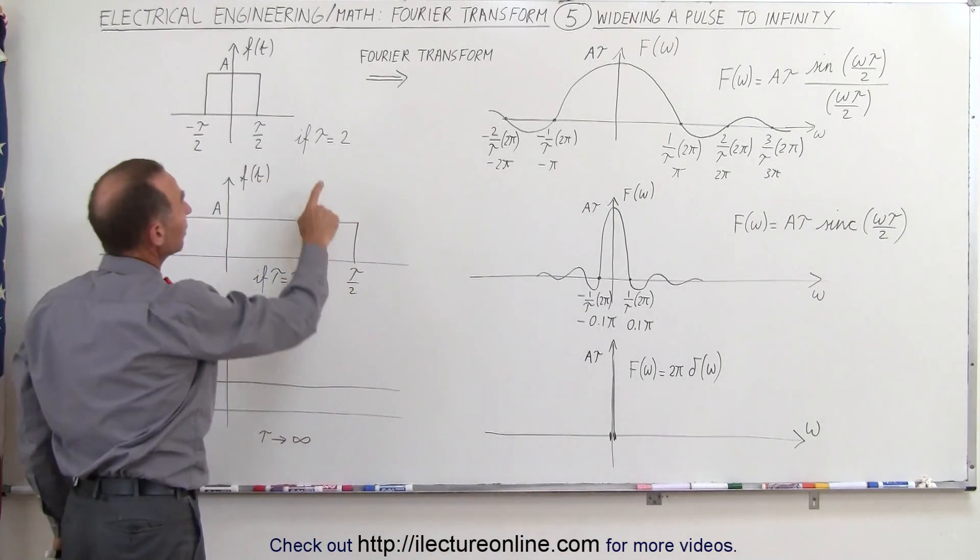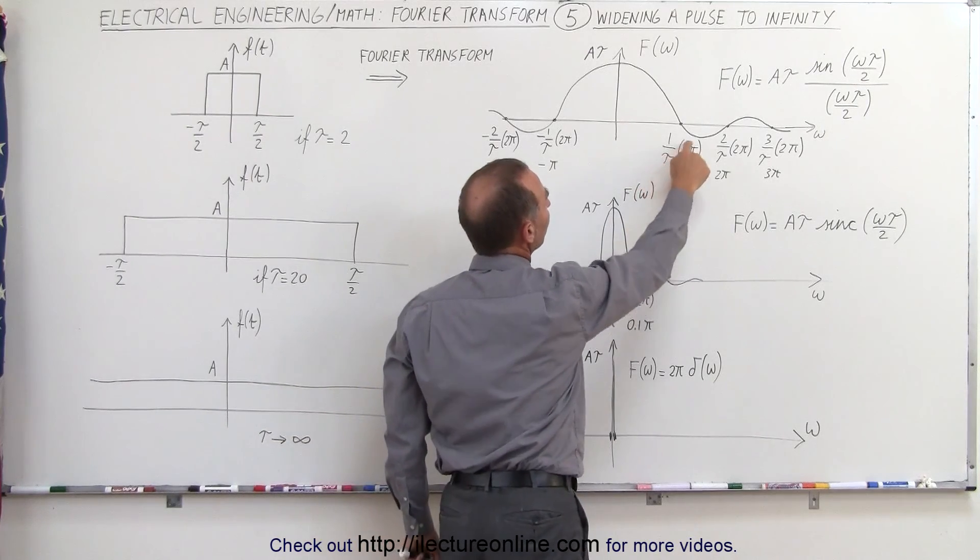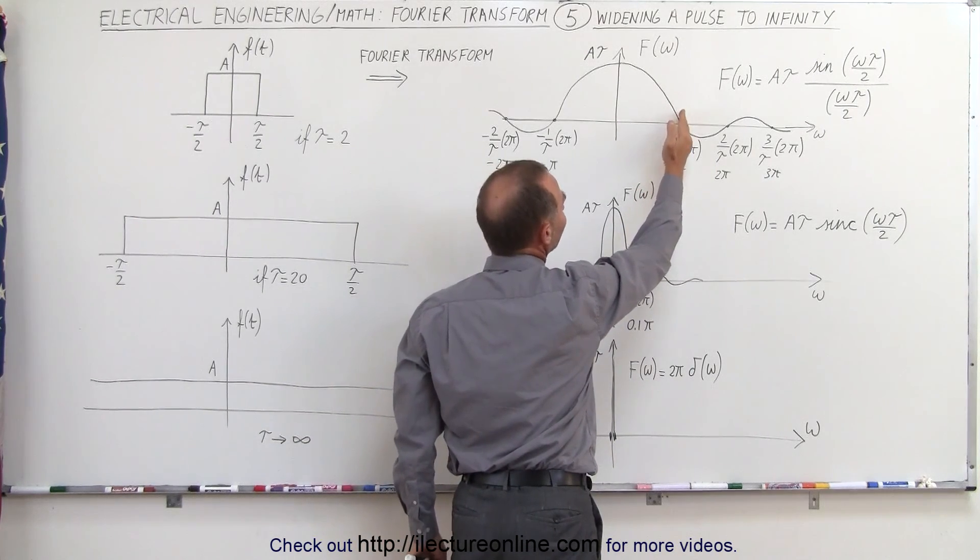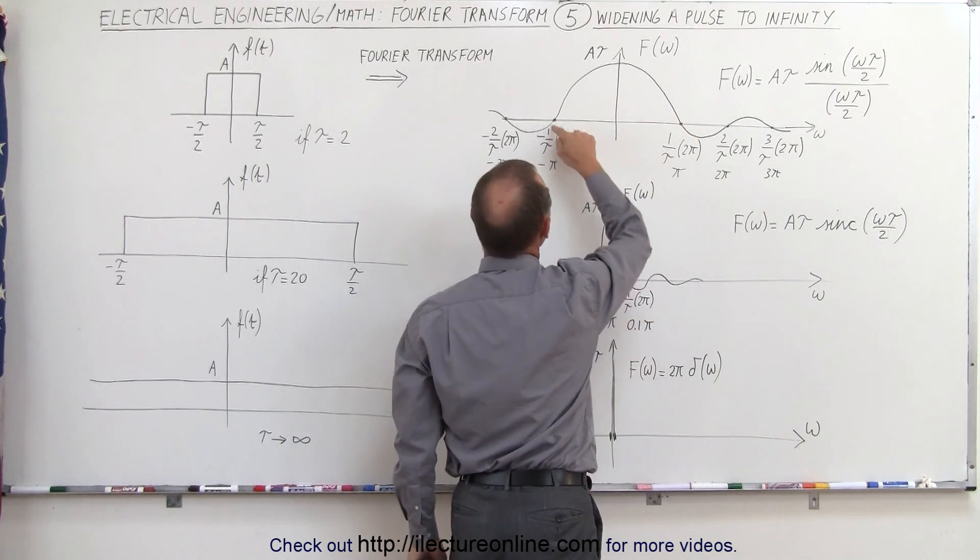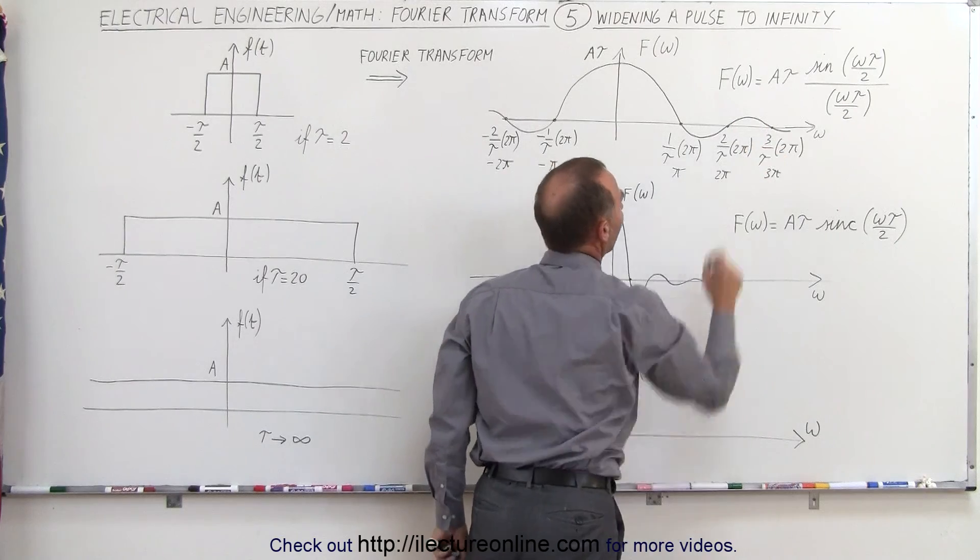In this example, if tau equals 2 and we plug that in, notice the 2s cancel out, and we simply end up with pi on the right side as the crossover point, and minus pi on the left side, 2 pi for the second crossover point, 3 pi, and so forth.